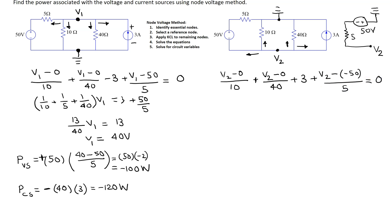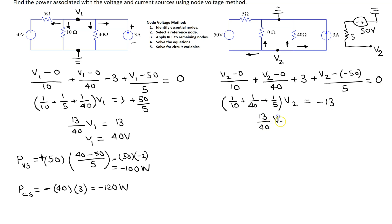Solving this equation, we collect the terms with V2 on one side and move the other terms to the other side. This gives minus 13 on the right-hand side — that's 3 plus 10, moved to the other side becoming minus 13. Solving, V2 is minus 40 volts. We can see that choosing a different reference node changes the magnitude of the node voltages.